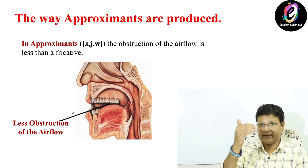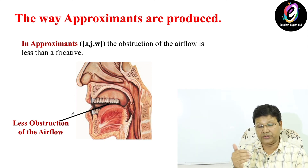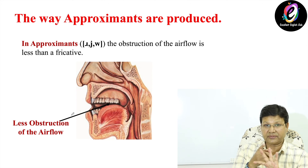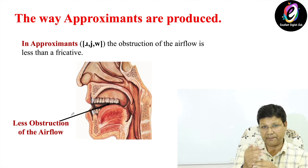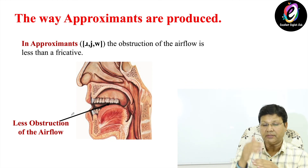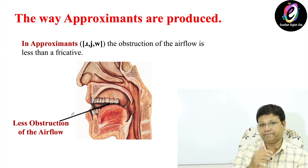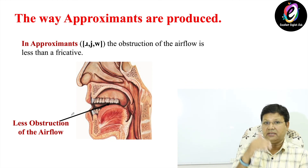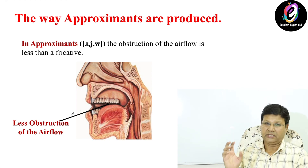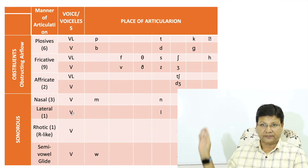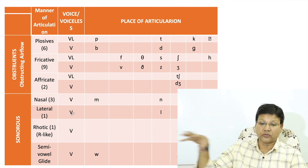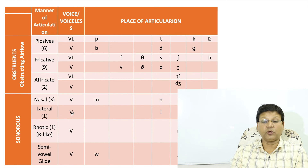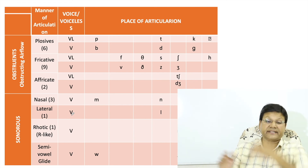There are seven groups of manner of articulation: plosives, fricatives, affricate, nasal, then approximants — within which we have lateral, semivowel, and rhotic. Look at this chart where I have put all the sounds together. The first column shows the manner of articulation, the second shows whether sounds are voiced or voiceless.